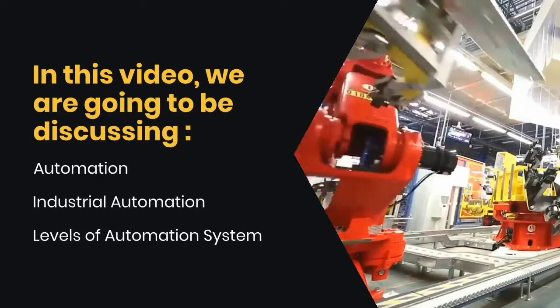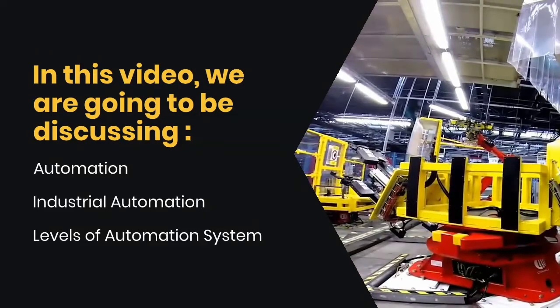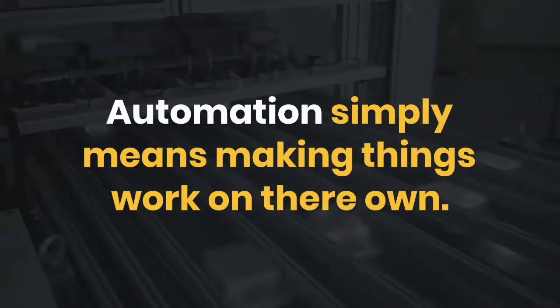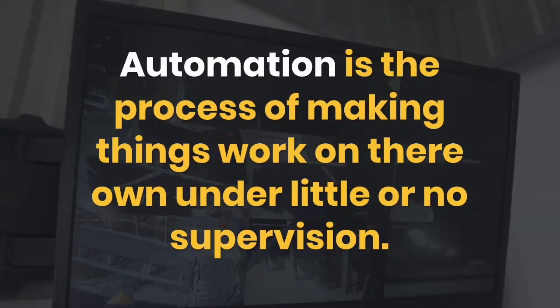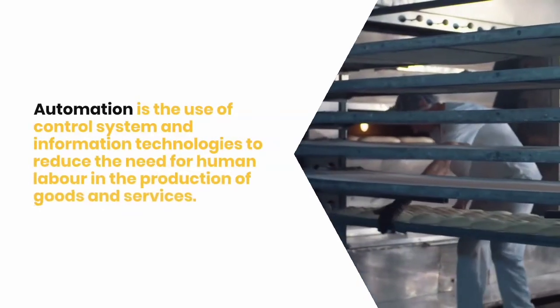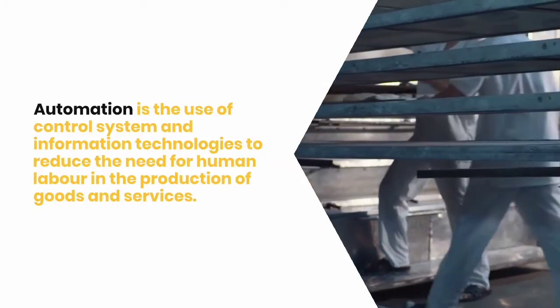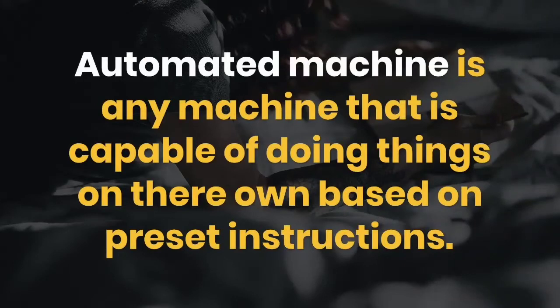In this video we are going to be discussing automation, industrial automation, and levels of automation. Automation simply means making things work on their own. It is the process of making things work on their own under little or no supervision — the use of control systems and information technologies to reduce the need for human labor in the production of goods and services.